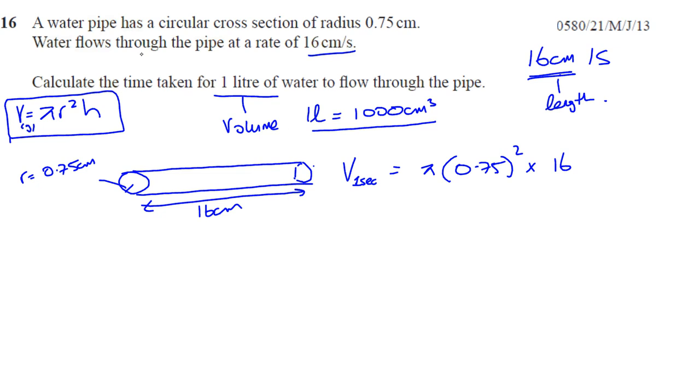We've got to be very careful - that's in centimeters and that's in centimeters, so all the units are compatible. You've got to be careful that the units are compatible before you use it. Now 0.75 squared is basically three quarters squared, which is 9 over 16.